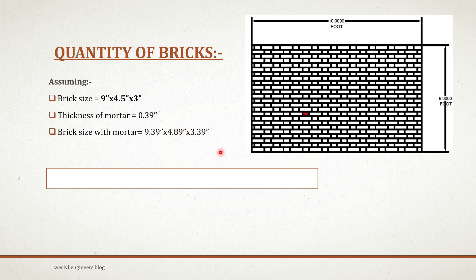To calculate the number of bricks, you have to remember a simple formula: number of bricks equals volume of brickwork divided by volume of one brick with mortar. Volume of brickwork is nothing but the volume of the wall.